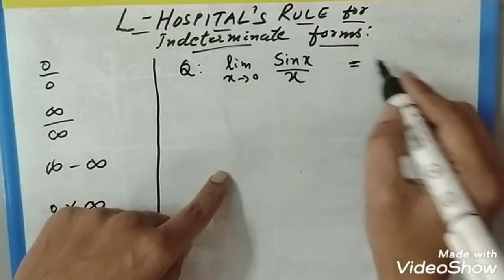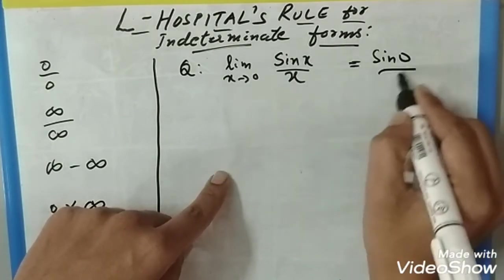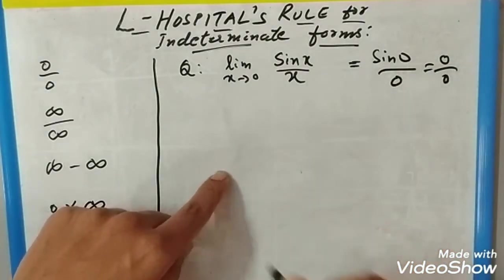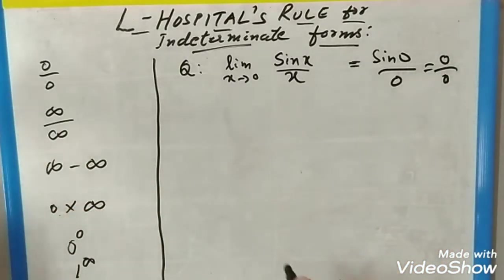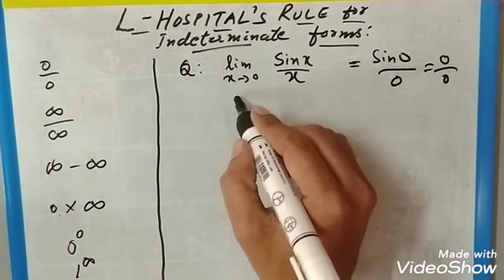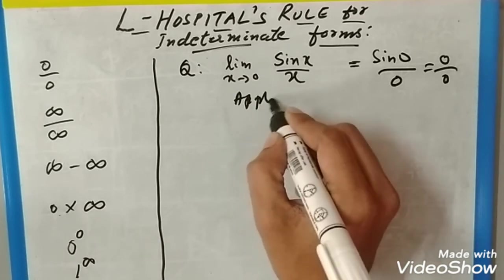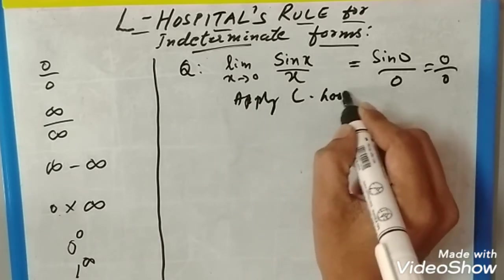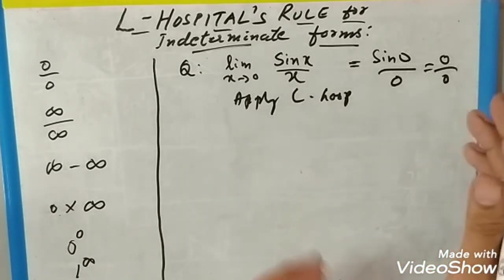You will get sin(0)/0, which is 0/0 form. This is one of the indeterminate forms. Now what we need to do is apply L'Hospital's rule. What is L'Hospital's rule?